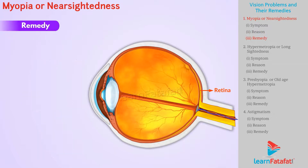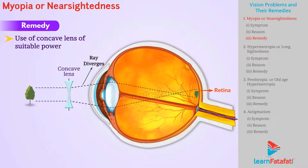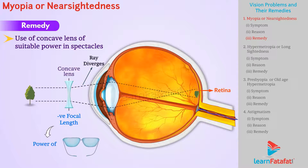Remedy: To correct this defect, there is a need to diverge the light rays falling on the lens. Hence, a concave lens of suitable power is used in spectacles. Since the focal length of the concave lens is negative, the power of spectacles for a myopic eye is negative.